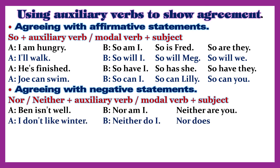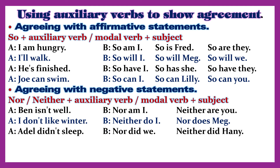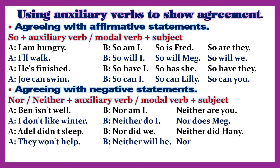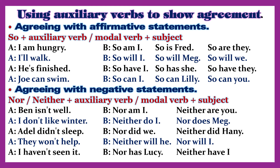Agreeing with negative statements: Nor/Neither + auxiliary/modal verb + subject. Examples: A: Ben isn't well. B: Nor am I. Neither are you. A: I don't like winter. B: Neither do I. Nor does Meg. A: Adele didn't sleep. B: Nor did we. Neither did Hanni.